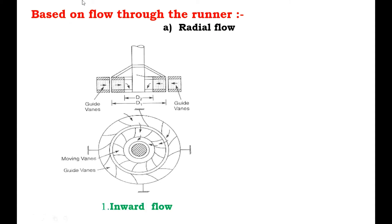The next classification is based on the flow through the runner. The first type is radial flow, which is classified into inward flow. In the inward flow reaction turbine, water from the casing enters the stationary guiding wheel, which consists of guide vanes that direct the water to enter the runner consisting of moving vanes. The water flows over the moving vanes in the inward radial direction and is discharged at the inner diameter of the runner.